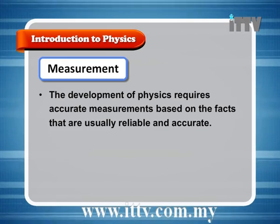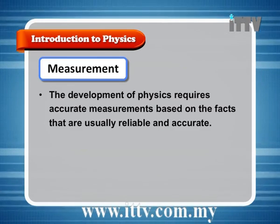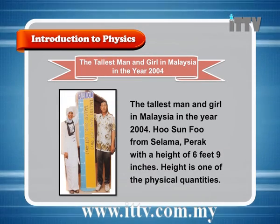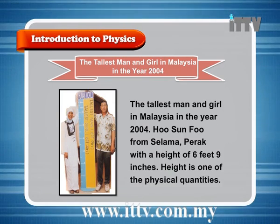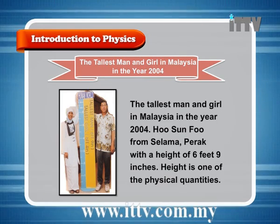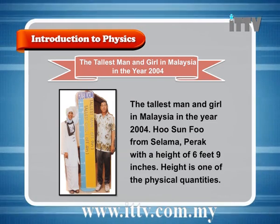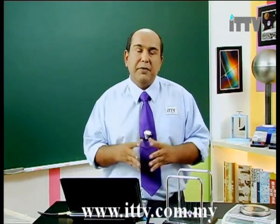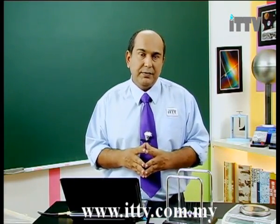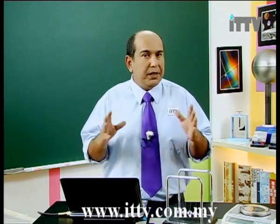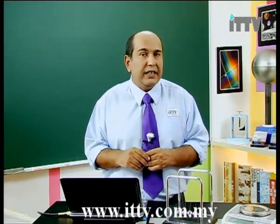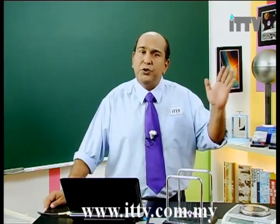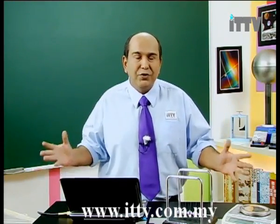Measurement: the development of physics requires accurate measurements based on reliable and accurate facts. For example, the tallest man in Malaysia in 2004, Hosan Fu from Selama Perak, had a height of 6 feet 9 inches. Height is one of the physical quantities. Here we used an older unit — feet and inches — rather than the SI base unit of meters, but it gives you the idea that height is something we can measure, as opposed to a mother's love which is not.